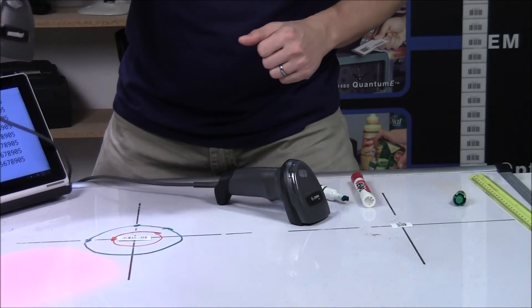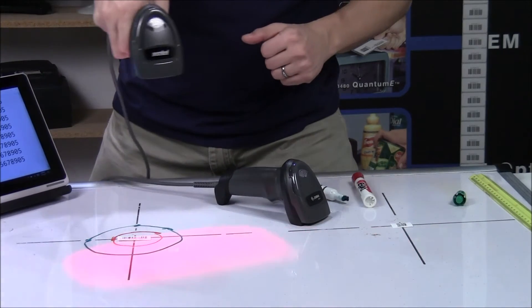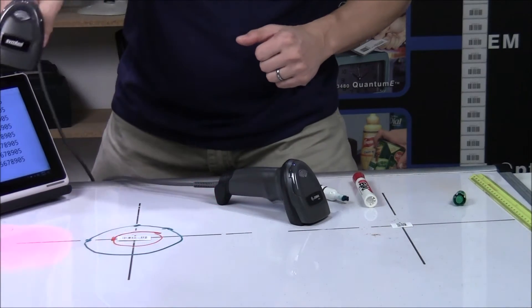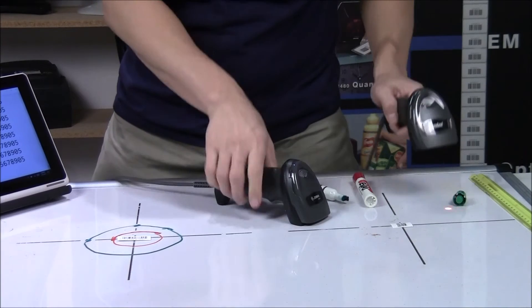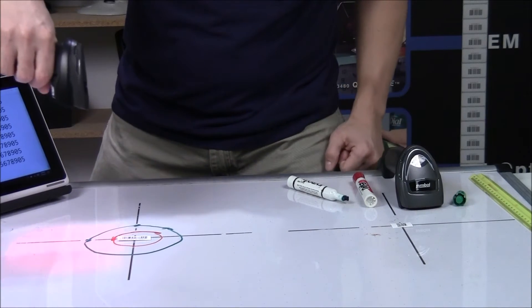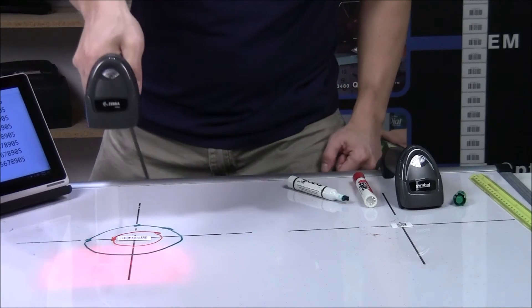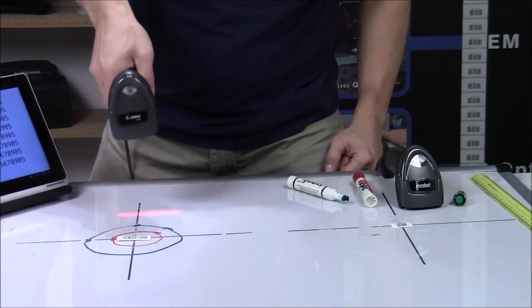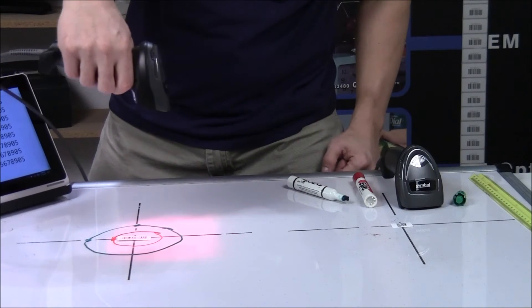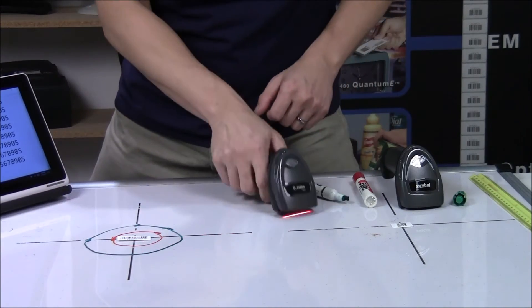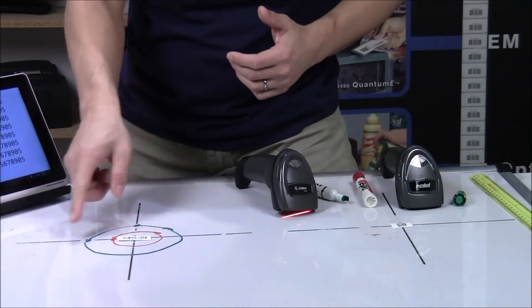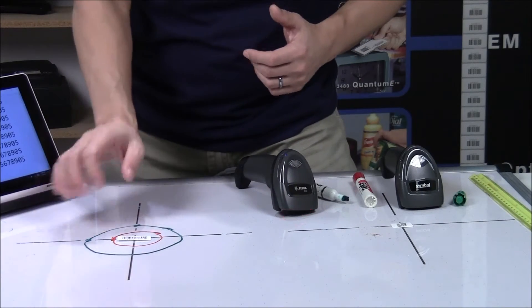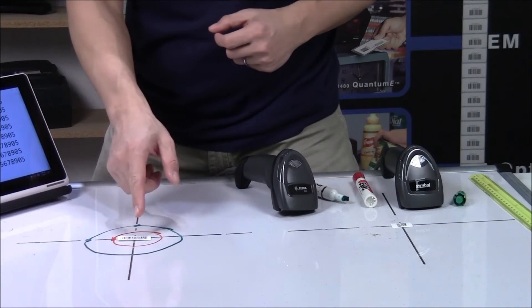There's your margin for error. So, you can see how the 4308 has a bigger room, bigger range of error to get a correct scan.